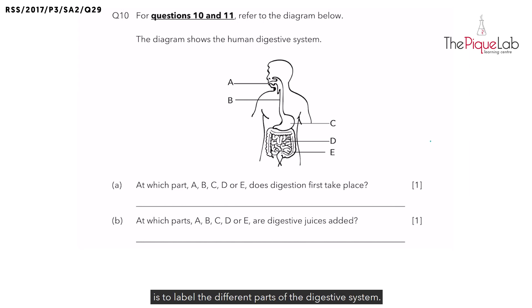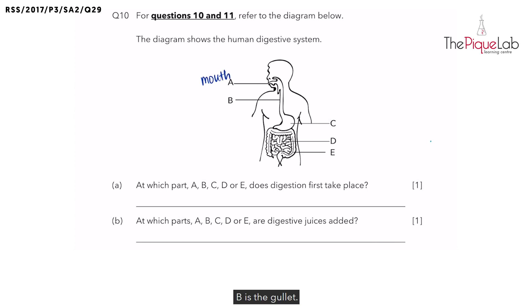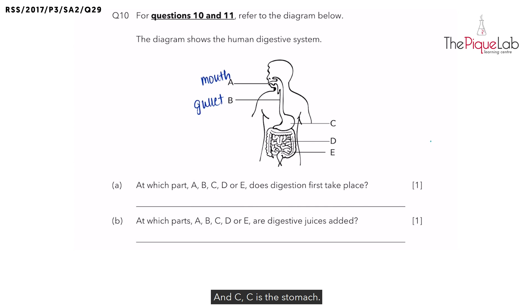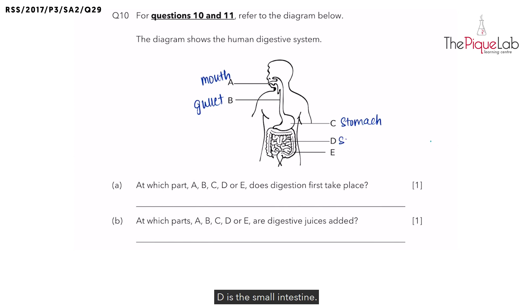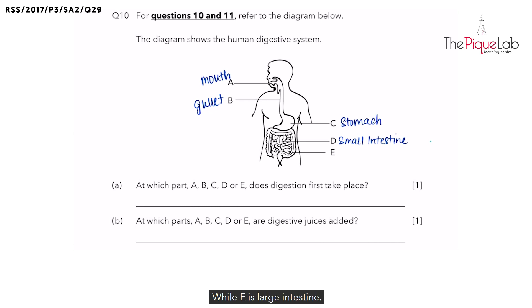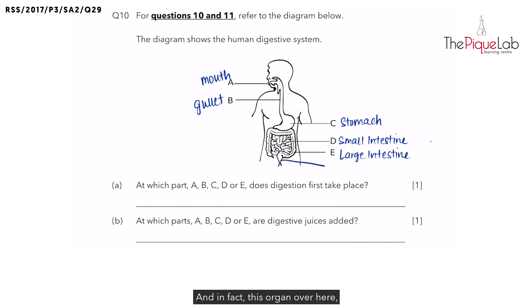The diagram below shows the human digestive system. The first thing I would recommend my students to do is to label the different parts of the digestive system. So A is the mouth, B is the gullet, C is the stomach, D is the small intestine, while E is the large intestine. And in fact this organ over here, which is known as the anus, is also part of the digestive system.